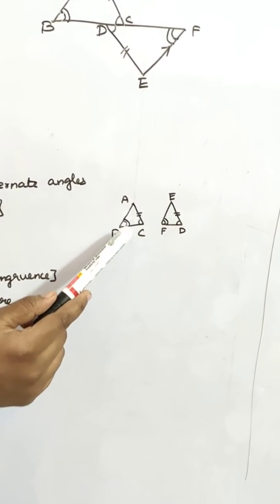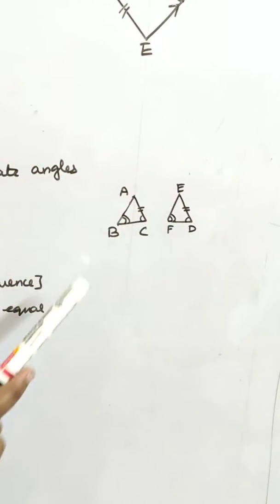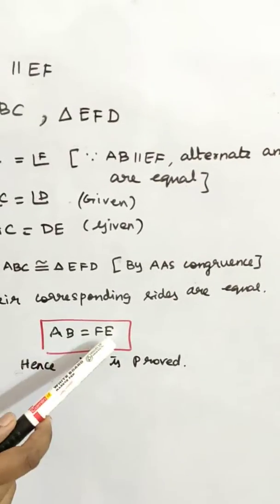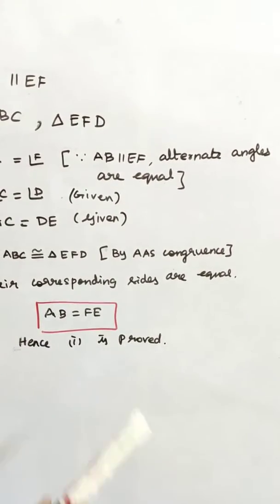So corresponding sides AB equal to FE. Hence the first one is proved.